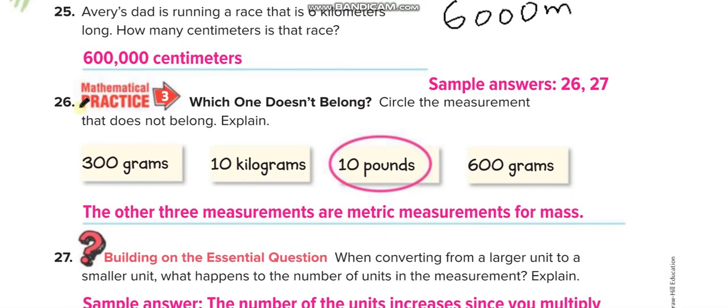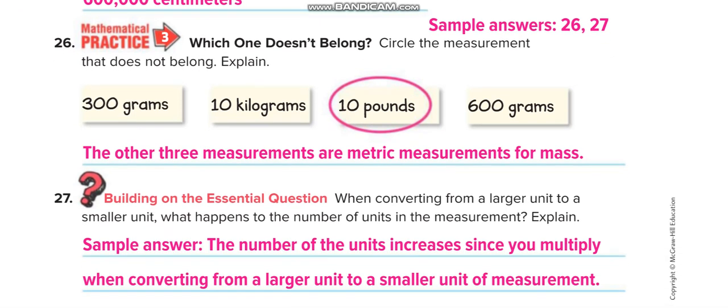Circle the measurement that does not belong: gram, kilogram, gram — and pound. Pound is a customary unit, not a metric unit. All the remaining measurements are metric units.